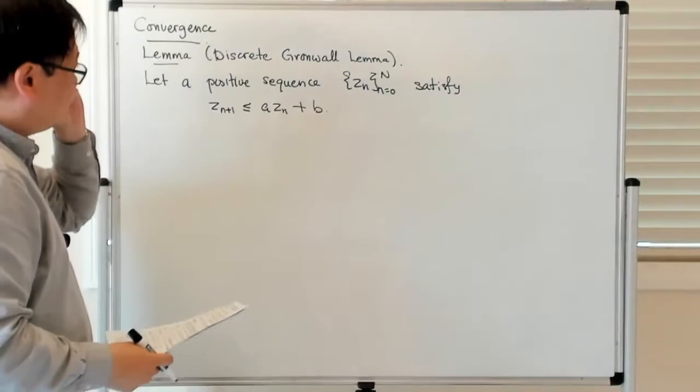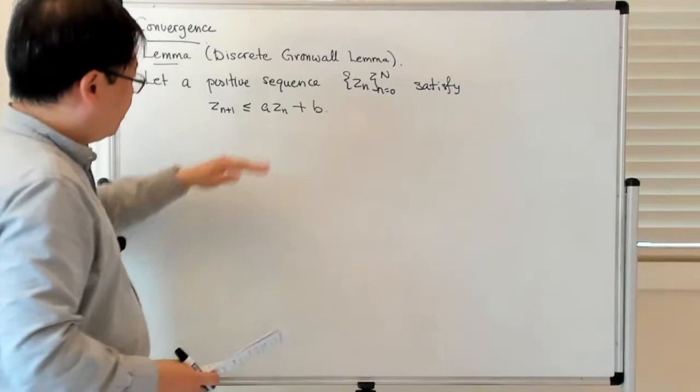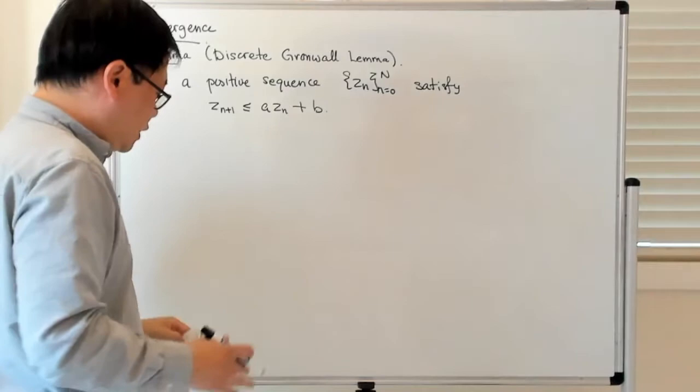The basic idea is that the Z's, as you might expect, have to do with the error at each time step. The error at the new step is bounded from above by the error at the old step times some amplification factor, plus some new source of error.